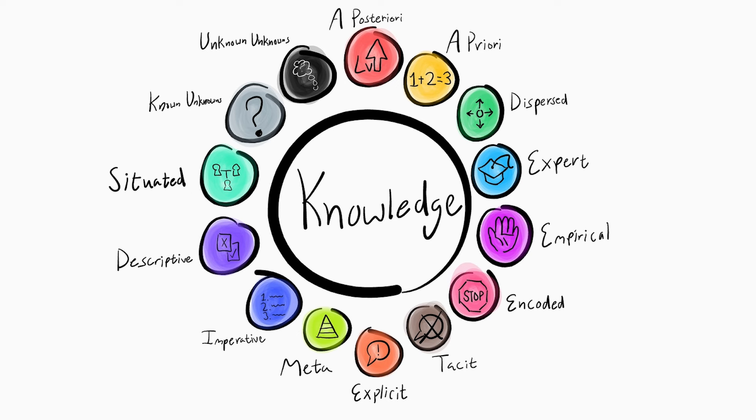Next is a priori. This is the opposite of a posteriori. This is knowledge that can exist without experience. An example is 1 plus 2 equals 3. This can be understood without seeing it happen in front of you. You don't need to get one object, then two objects, and then combine them together to understand that you have three.